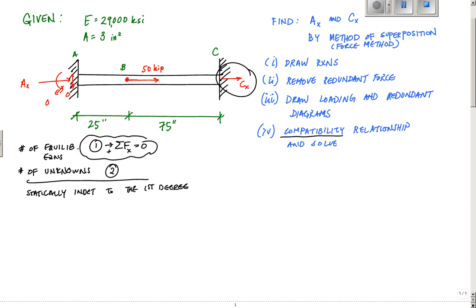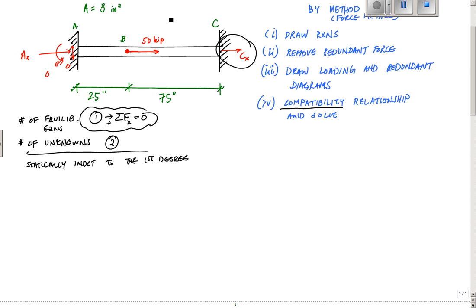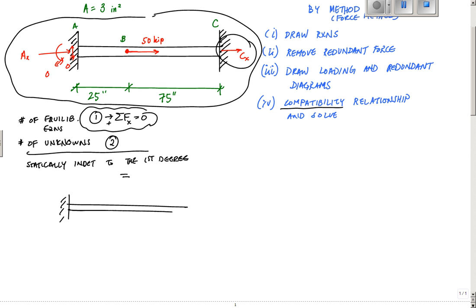So what I can do by method of superposition is say, hey, let me say this whole thing right here is equal to, I'm going to draw it one time here. This right here with, by removing C sub X right here. I remove C sub X. So essentially I have what looks like a cantilever, with only axial loading plus here this other structure, this exact same looking deal with C sub X added on right here as a redundant. So here this was, here I just have to remember this would be, I have to make sure when I remove this, I just include my loading, which is 50 kips. That's 50 kips here. And this is called my loading diagram. This is my loading and redundant diagrams. This is my loading diagram.